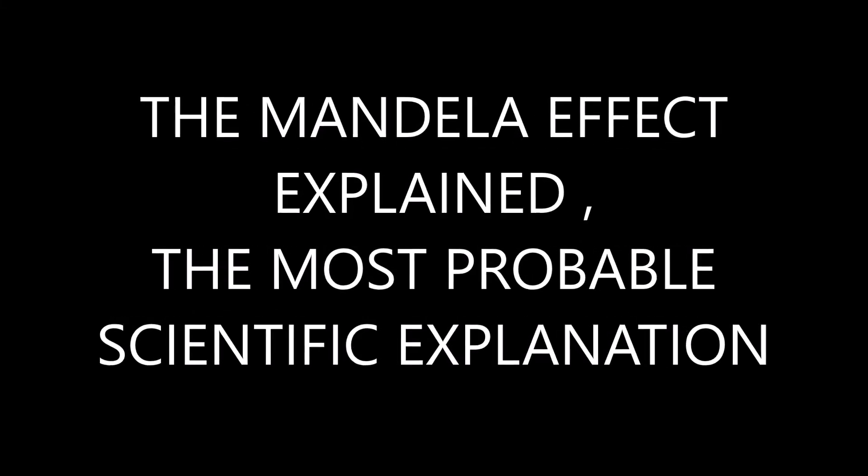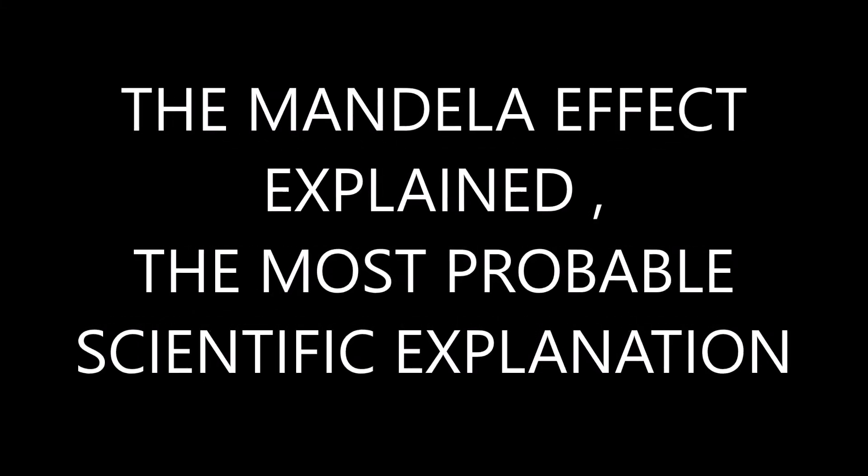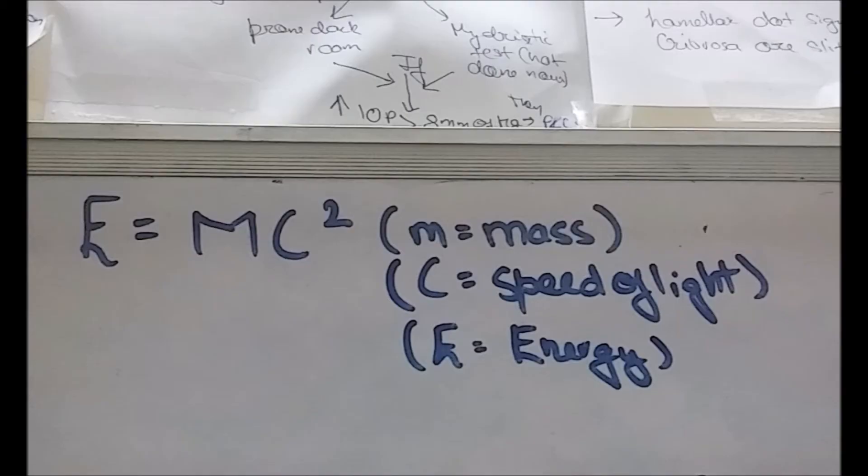Okay, so this is what I understood after spending months trying to understand what happened here. Since school we've been taught that E equals MC squared, where E is energy, M is mass, and C is the speed of light.